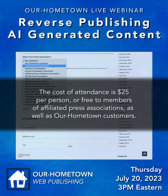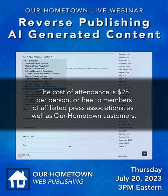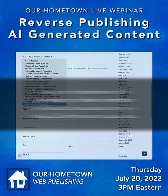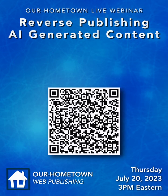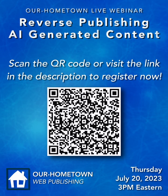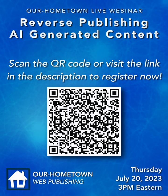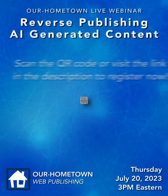The webinar is free for our Hometown customers and members of our partnered press associations. Click the link in the description or scan the QR code to sign up now. We look forward to seeing you on July 20th at 3 p.m. Eastern for our comprehensive overview of reverse publishing with AI content.